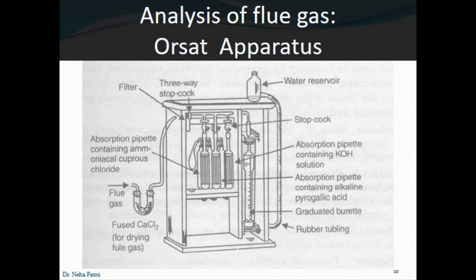You are supposed to create vacuum first because the entire apparatus is filled with air, and you have to analyze flue gas only. The first step is to create vacuum in the entire apparatus using the three-way stopcock V. You open the V gate and start adding water to the water container. The water flows down and starts filling inside the graduated burette, coming through S3, S2, and S1. You follow the procedure till the water reaches V, and the air has evacuated into the environment.